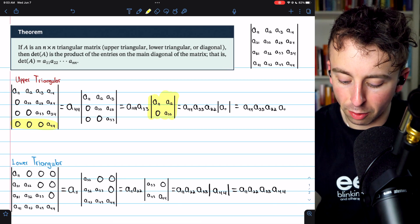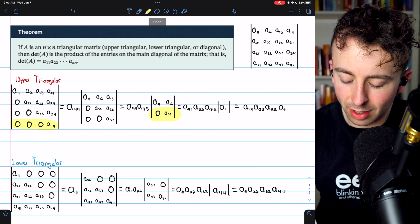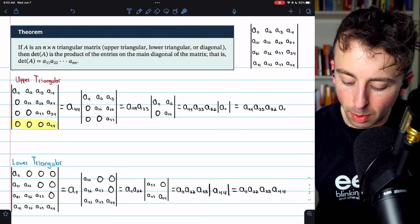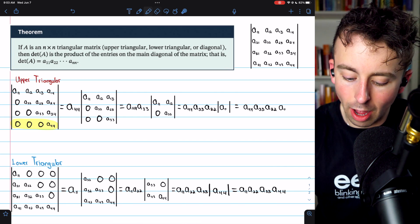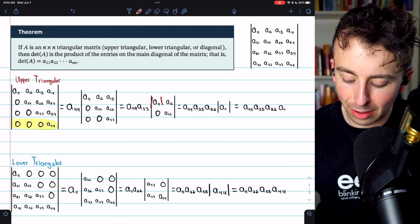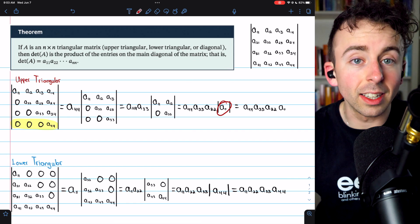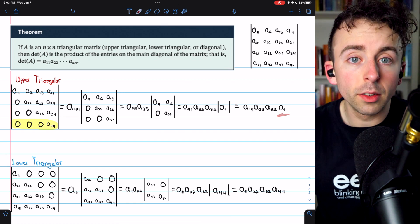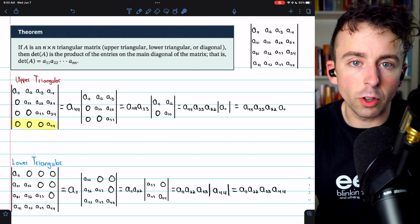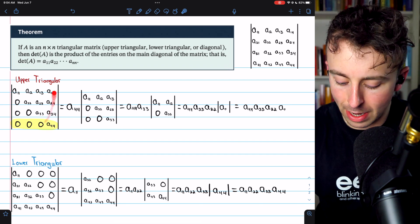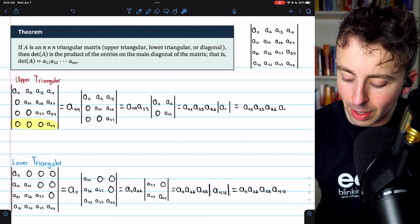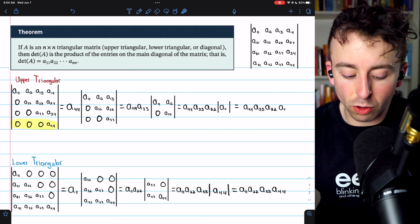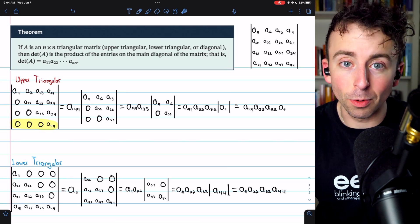We can continue the cofactor expansion. We'll use this row since it has zero. The zero is just going to give us a zero. And then we need to multiply by A22 times the determinant of this sub-matrix. That's just the determinant of a single entry. And the determinant of that, by definition, is just that entry. So by applying the cofactor expansion definition of the determinant to this matrix, we find that its determinant is A44 times A33 times A22 times A11. It's just the product of the entries on the main diagonal. Pretty nice.